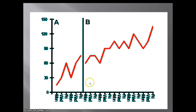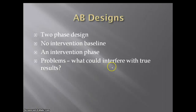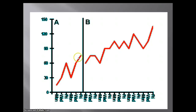Here's an AB design related to study skills. We establish a baseline before this point, and the B phase is where we have implemented our intervention — measuring how many minutes per day this person has been studying. After the intervention, the measure goes up. The problem is there's already an upward trend anyway, so it's really difficult to say whether or not what we did made a difference, because it was heading up regardless.